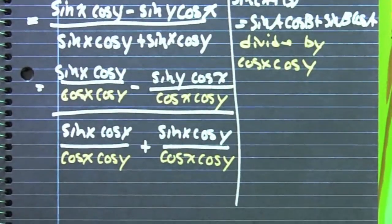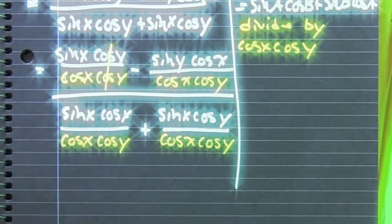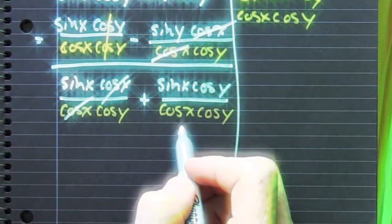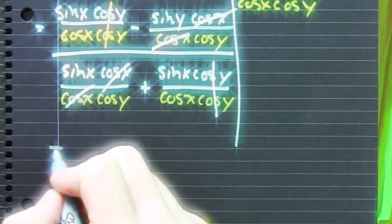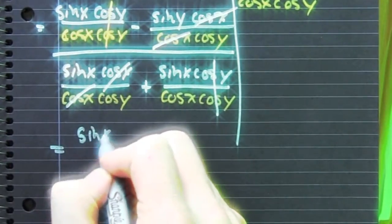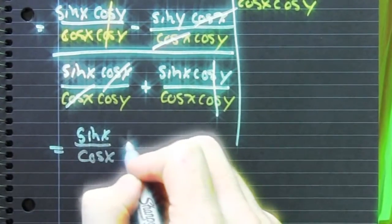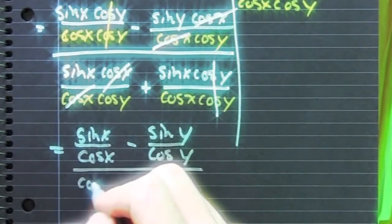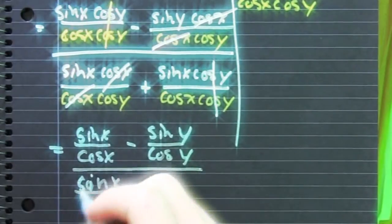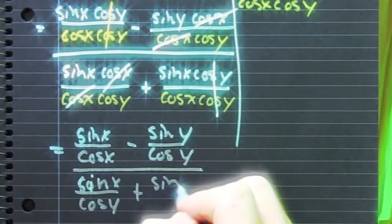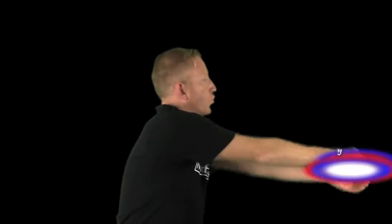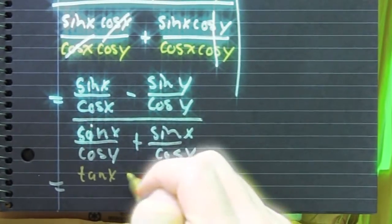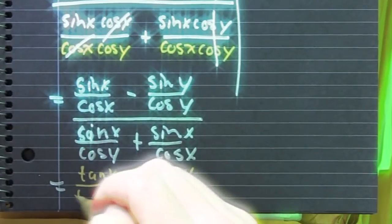We see an innocent deadfall, but what are we left with? A whole bunch of ratio identities. Do it. Okay, sine x over cosine x is tan x, tan y.